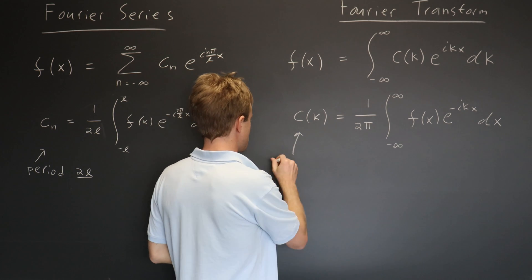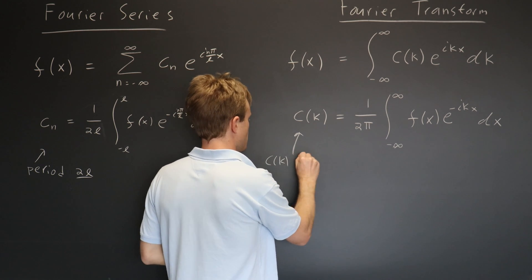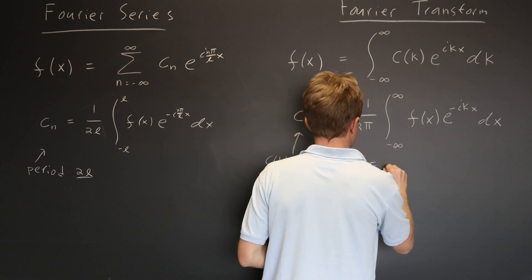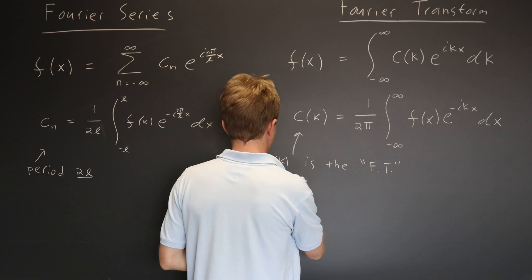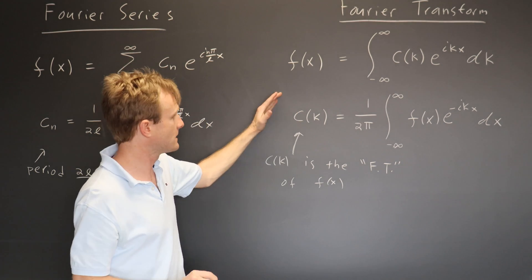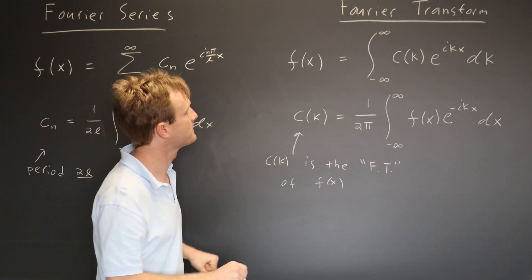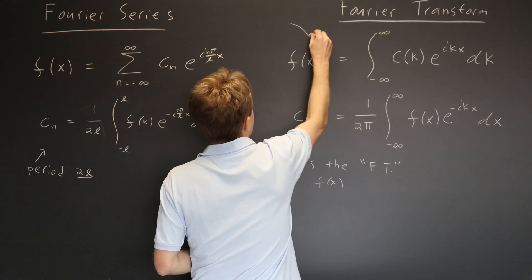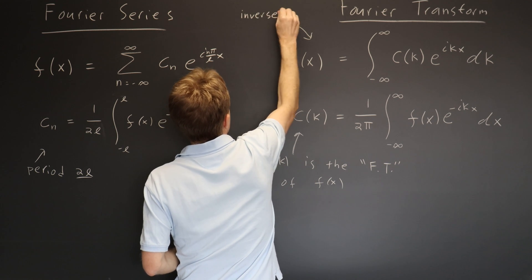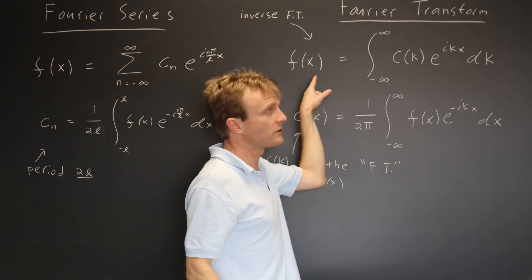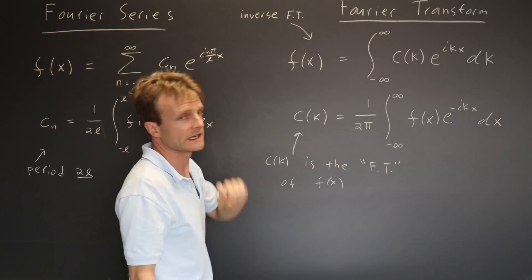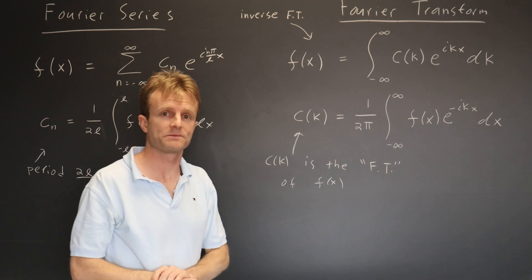we think of them as the Fourier transform and the inverse Fourier transform. So it's this function, c of k, which is called the Fourier transform of f of x. So this formula down here is the Fourier transform, and this formula here is the inverse Fourier transform. It's the formula that takes the Fourier transform, c of k, and tells you how to get back the original function, f.